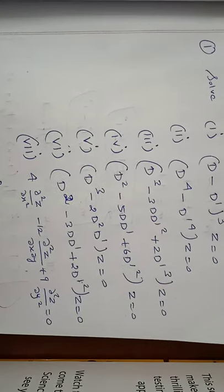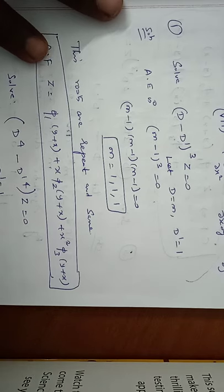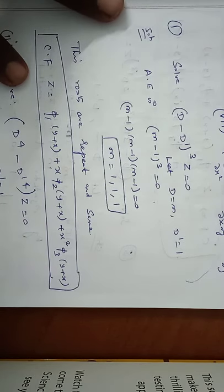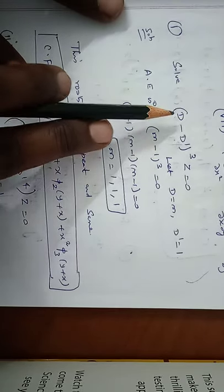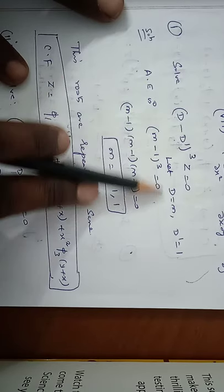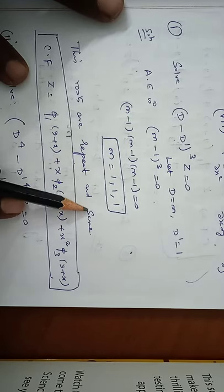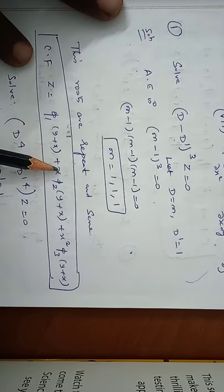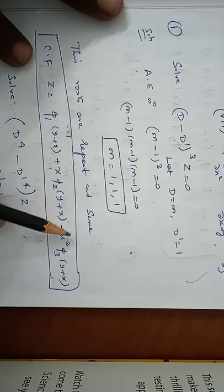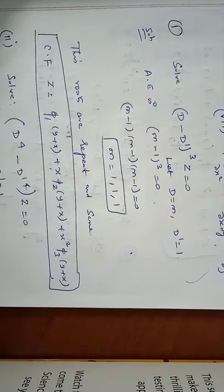We have to solve seven problems. Problem 1: solve (D - D')³z = 0. Let D = m and D' = 1. The auxiliary equation is (m - 1)³ = 0, so m = 1, 1, 1 — all three roots are equal and repeated. The complementary function is z = φ₁(y + x) + x·φ₂(y + x) + x²·φ₃(y + x). Since m is repeated three times, this is the final answer.